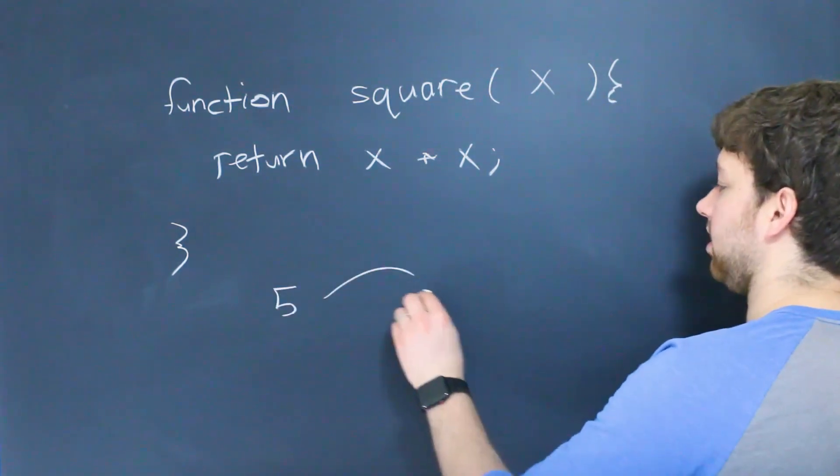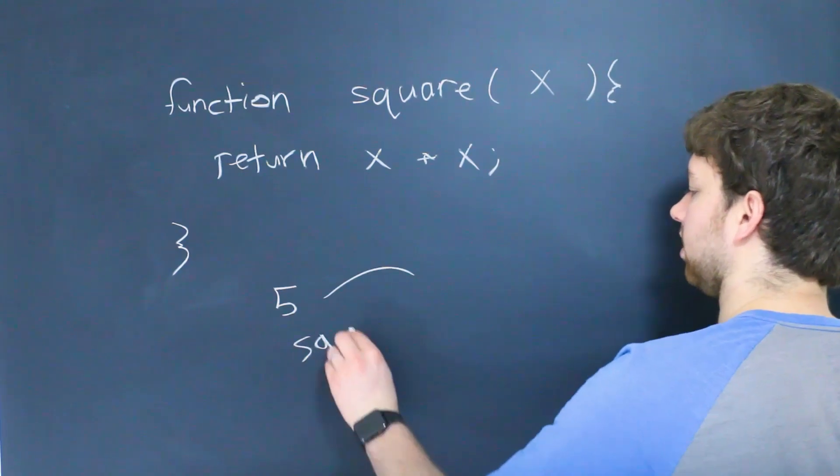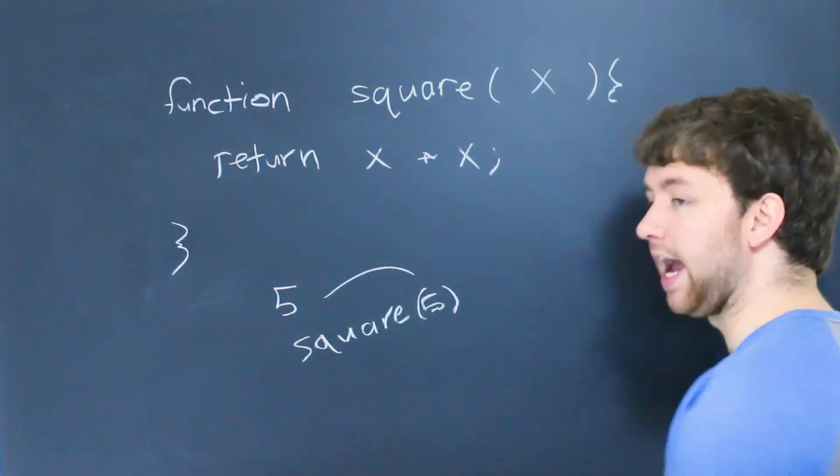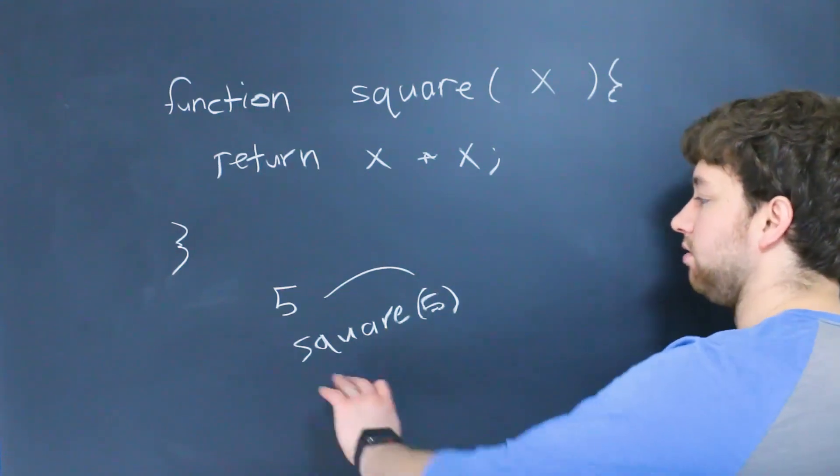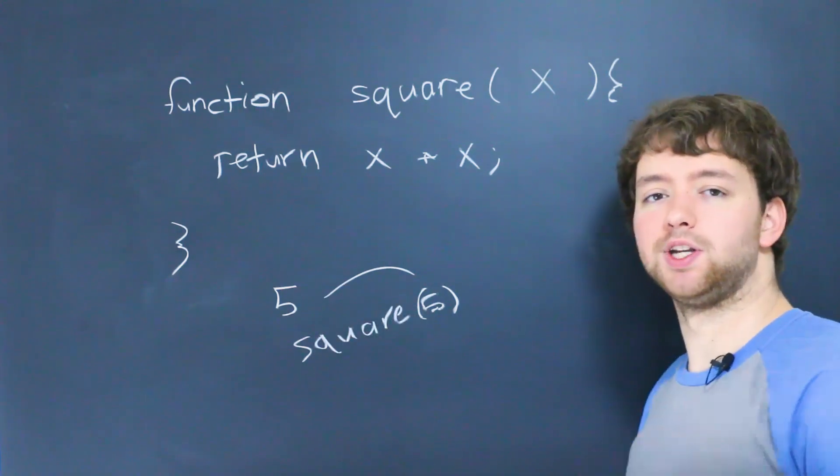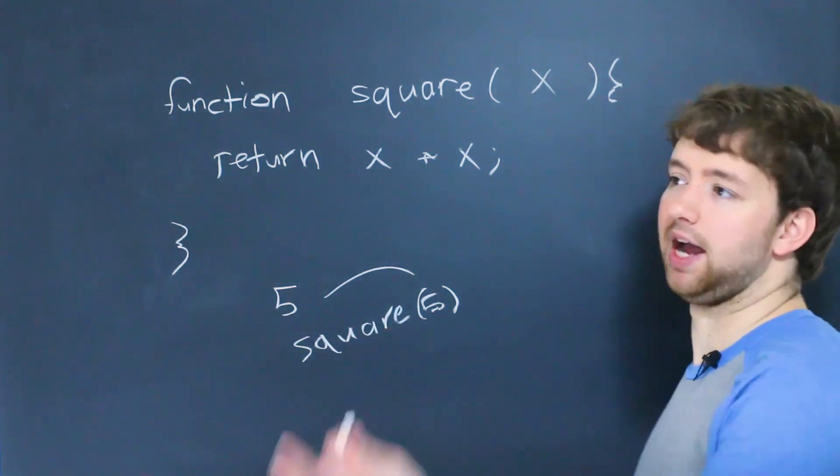That's going to get passed into the square function, which will look like this. And the return, what you get back is 25, 5 times 5. And you can do something with that value. So you can assign it to a variable, or you can output it to the console, or whatever. You can pass it as an argument, whatever you need to do.